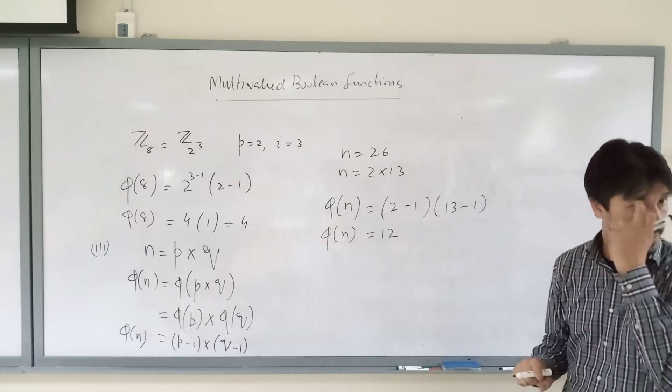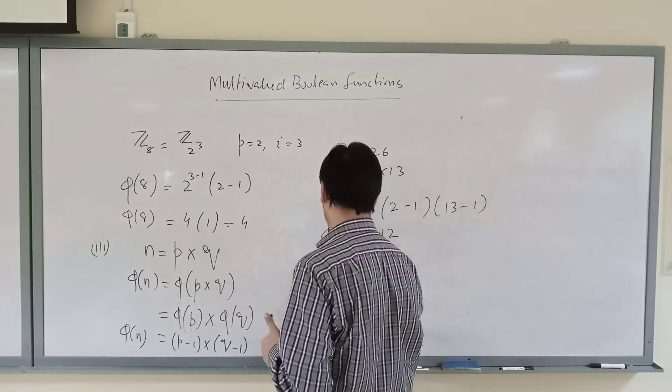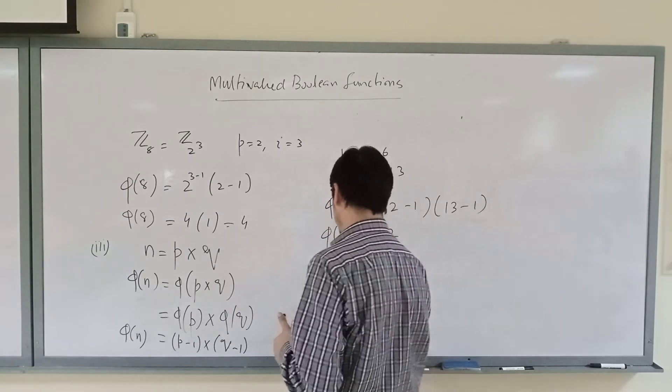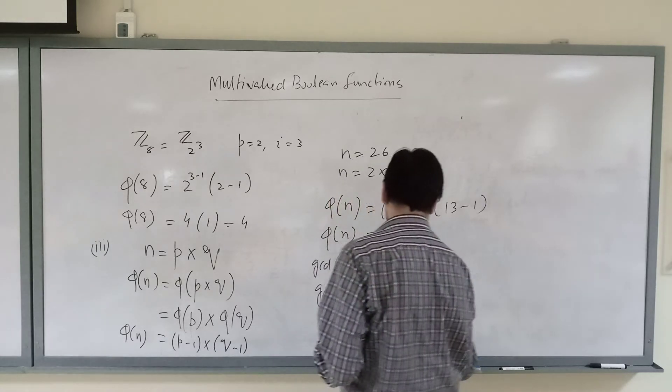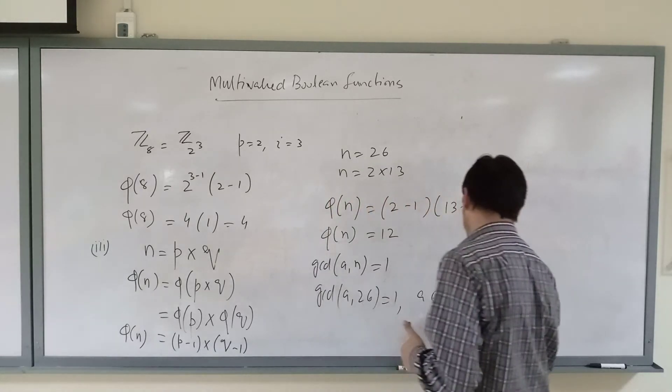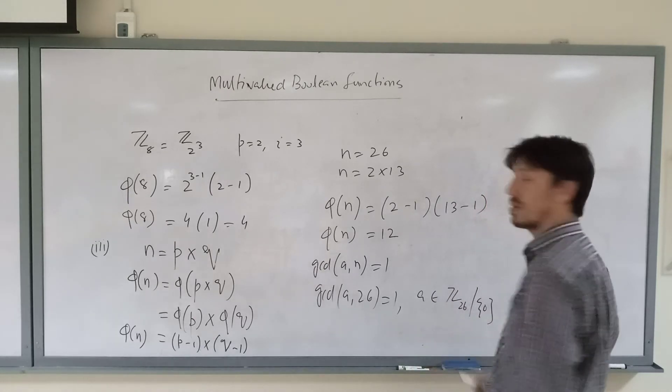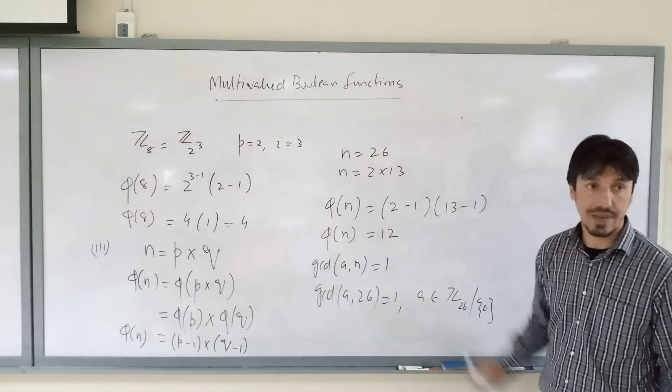How many are there? GCD with n is 1, I mean to say GCD of a with 26 is 1 where a belongs to Z 26. So how many are there? There are 12 elements.